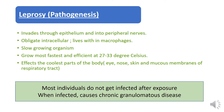Regarding leprosy pathogenesis: the bacteria invades through the epithelium and into peripheral nerves. It is an obligate intracellular organism that lives within macrophages. It is a slow-growing organism and grows most efficiently at 23 to 33 degrees Celsius. It affects the coolest parts of the body, for example the eyes, nose, skin, and mucous membranes of the upper respiratory tract.